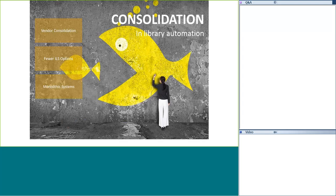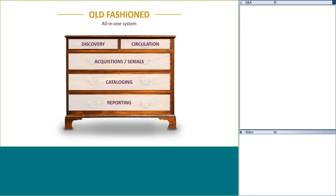The big fish have been eating the little fish very quickly in the world of library automation, in the world of library resources in general. So we are having fewer and fewer options. We have these monolithic systems and you have to buy the whole system. I find it very concerning that we have so few choices. Once you lose your choices, then from the vendor you do have, you get even fewer choices because they don't have competition and they don't have to.